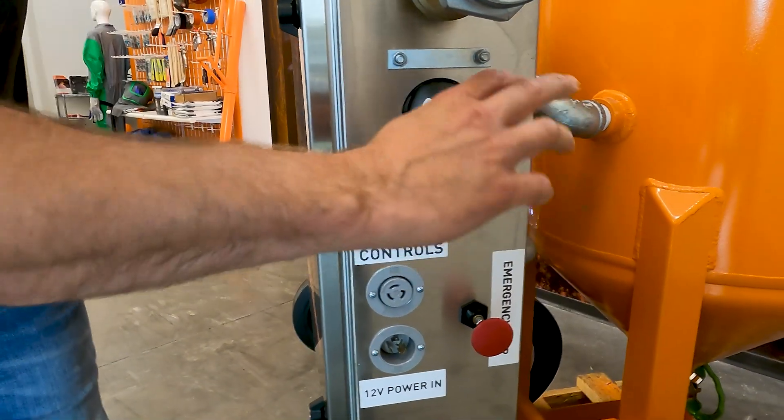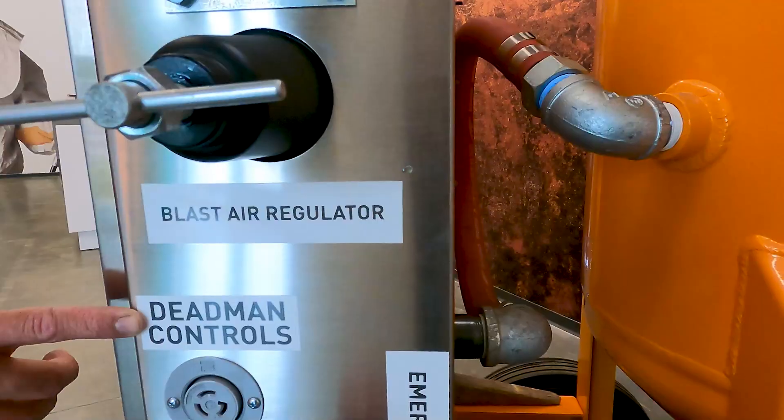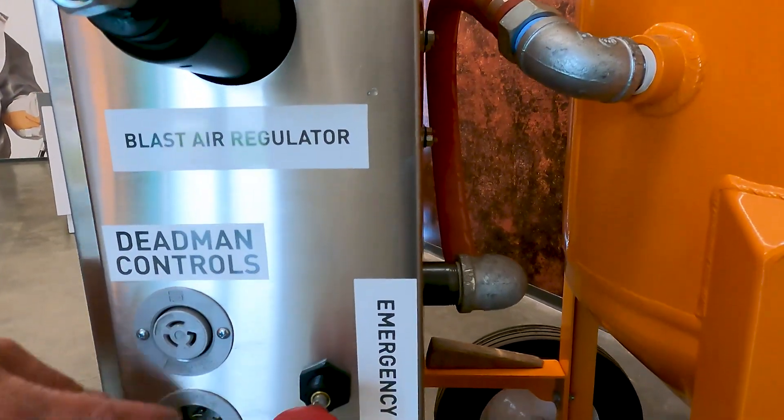The next things you're going to see are the blast air regulator, your dead man controls, and your e-stop.